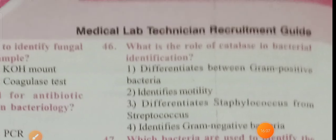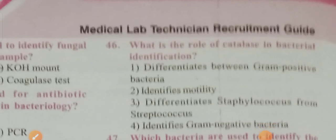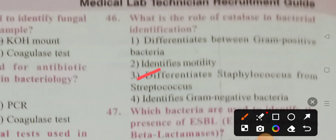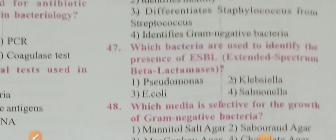What is the role of the catalase test in bacterial identification? Option 3 is the correct answer — it differentiates Staphylococcus from Streptococcus. Which bacteria are used to identify the presence of ESBL (extended spectrum beta-lactamases)? Option 2 is the correct answer — Klebsiella.